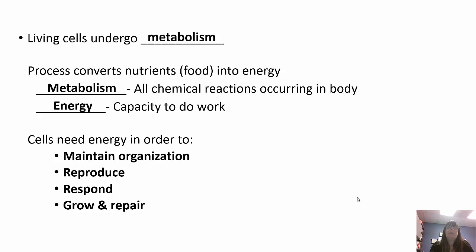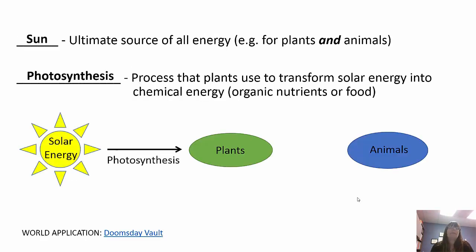Living cells also undergo metabolism — all of the chemical reactions happening in your body. This is how we convert nutrients from food into energy we can use. Energy is the capacity to do work, and we need energy for everything: to maintain our organization, to reproduce, to respond to stimuli, and to grow and repair tissues. The sun is the ultimate source of all energy for plants and animals. Photosynthesis is the process plants use to transform solar energy into chemical energy, which consumers can then use.